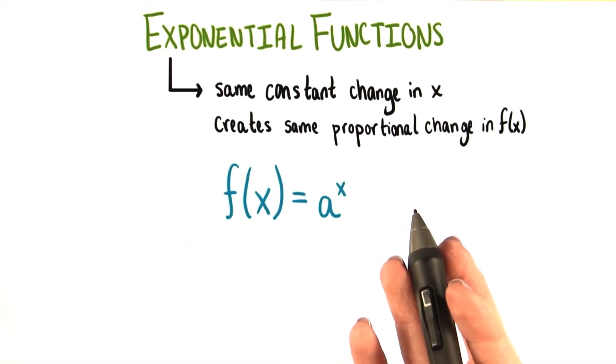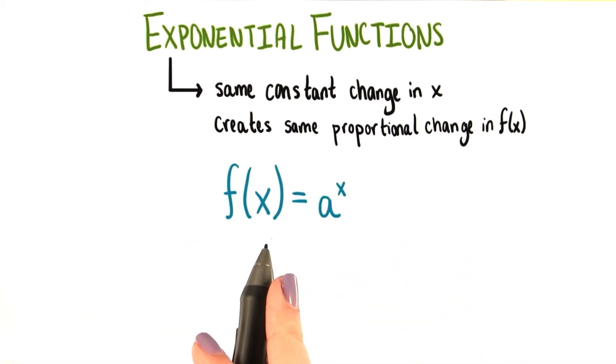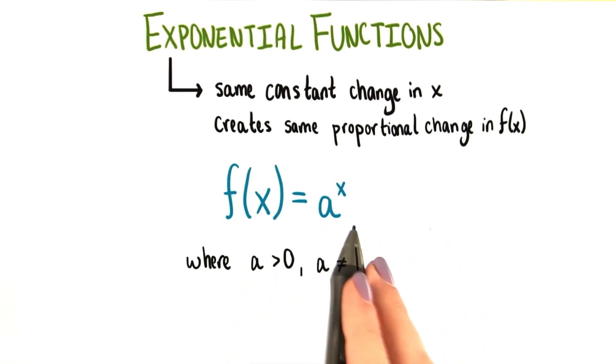Now, the general form of an exponential function looks like this. f of x equals a to the x power. Here, a is a positive constant other than 1.